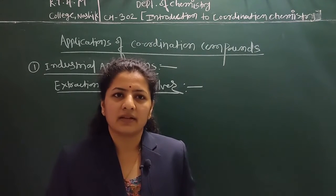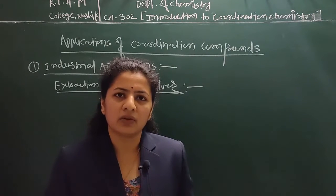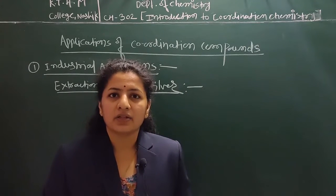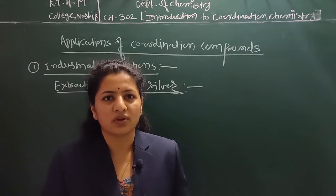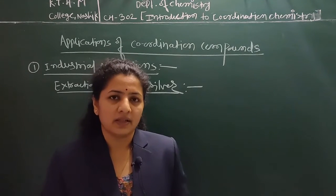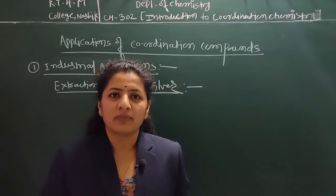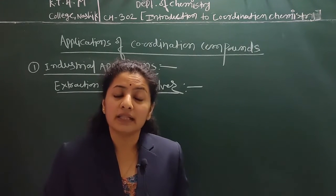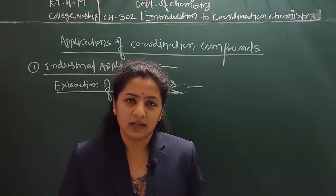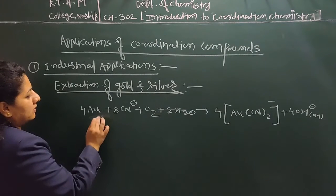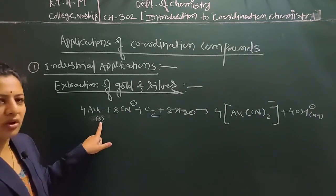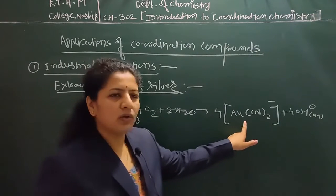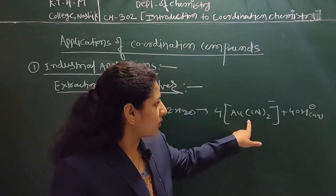In this typical process, we treat the crushed ore with aqueous solution of cyanide in presence of air. What happens is that these metals form complexes with the cyanide, and we can easily extract them from their respective ores. The crushed ore in solid form is treated with aqueous cyanide solution in presence of air, and the respective gold complexes form with cyanide as a ligand, allowing us to easily separate the gold from the ore.